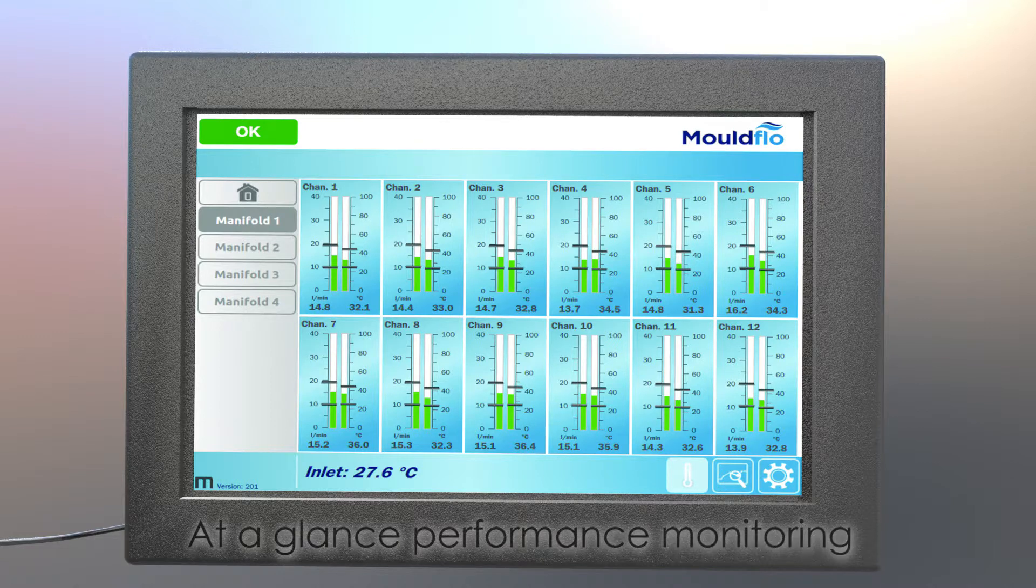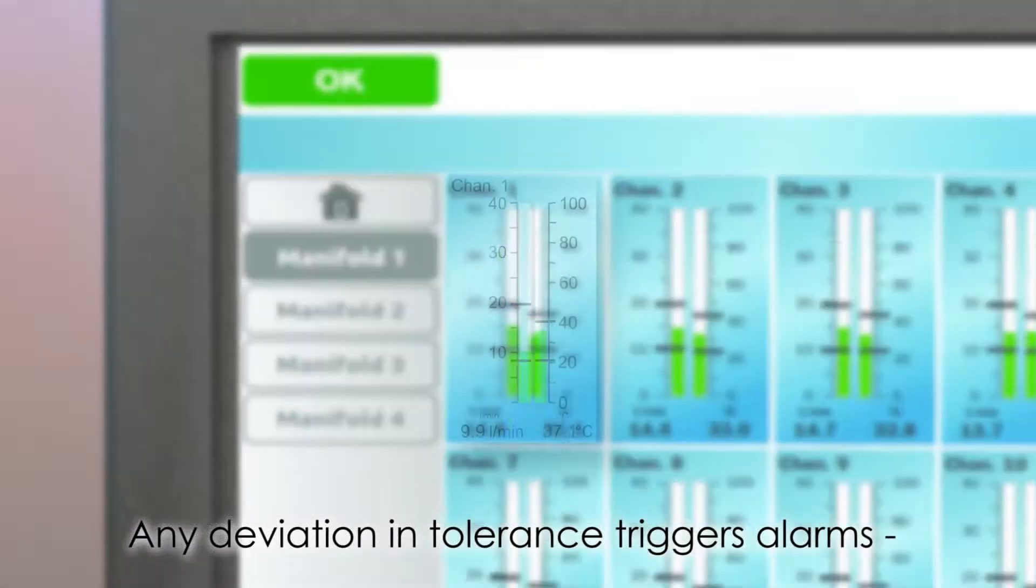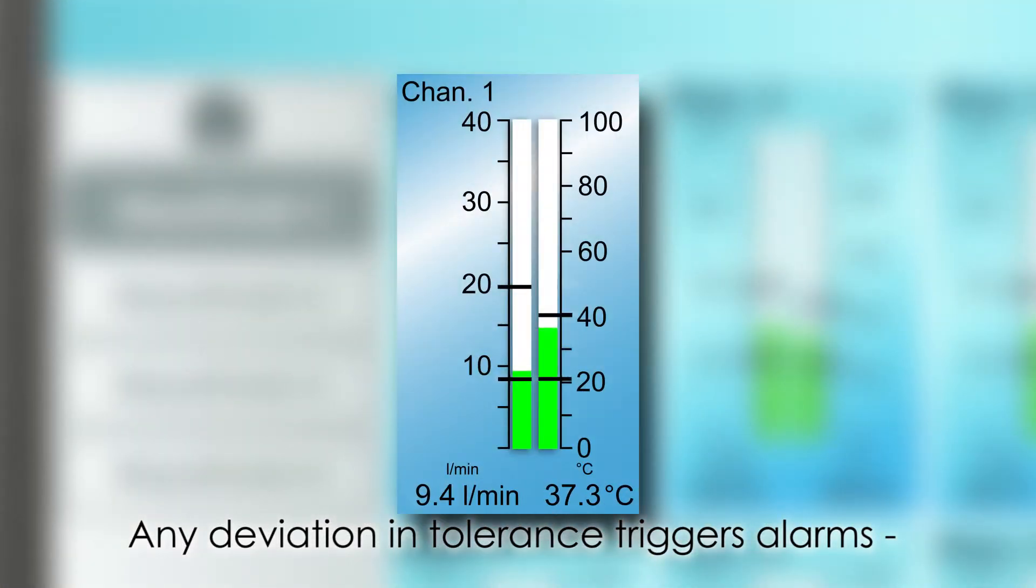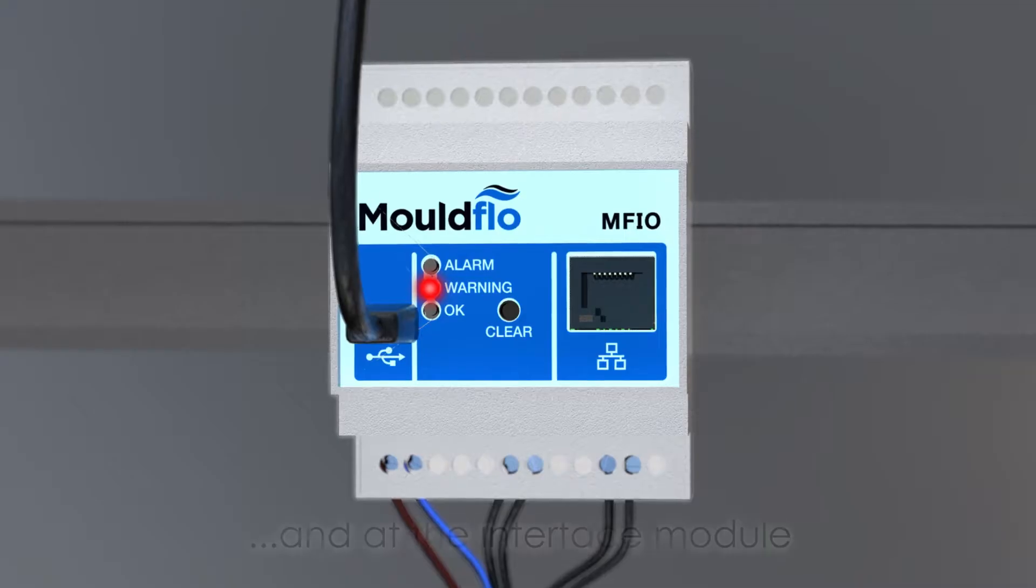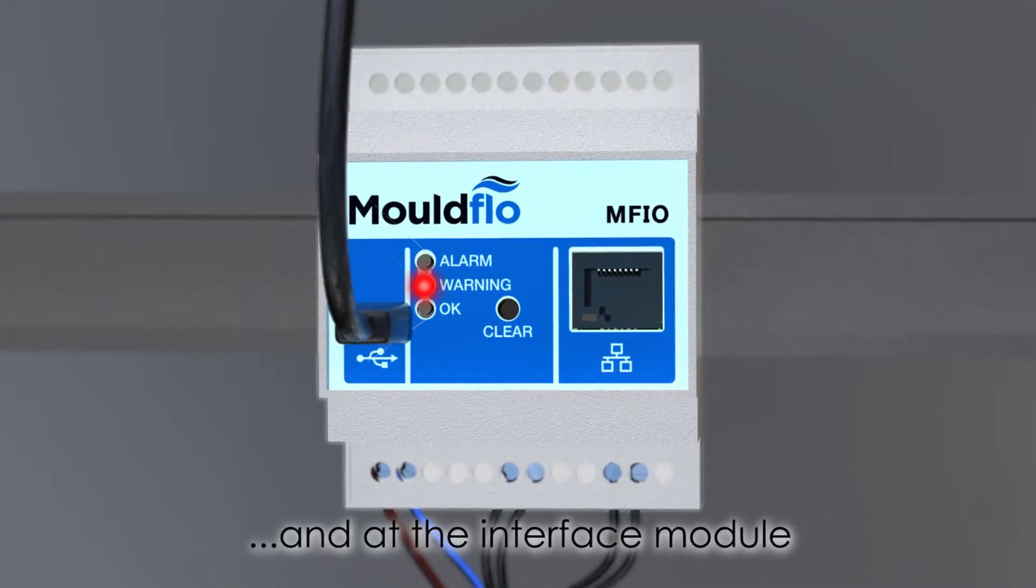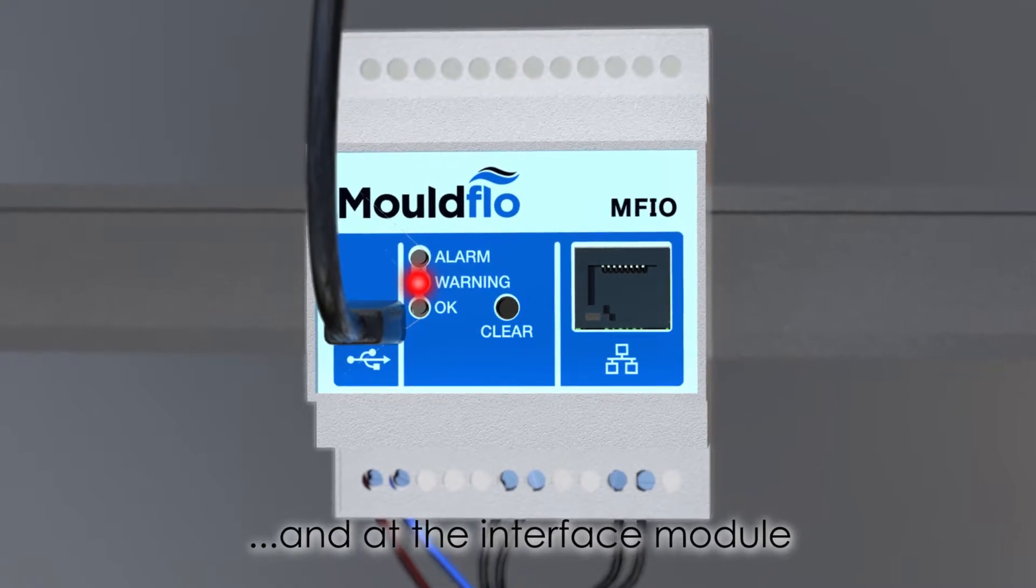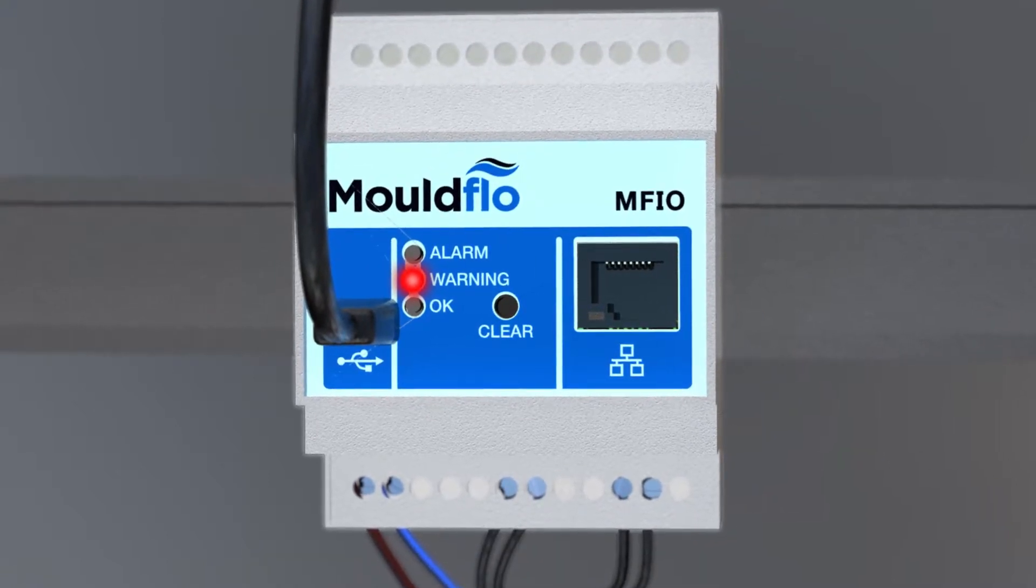Alarm limits can be set for both flow and temperature, meaning any deviation in tolerance can be easily identified. Alarms are displayed on the touchscreen and on the interface module, where an alarm output can be interfaced to the injection molding machine.